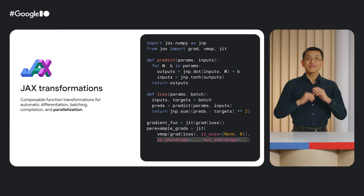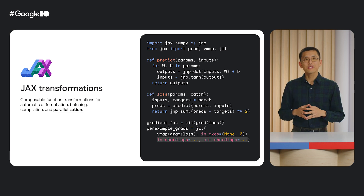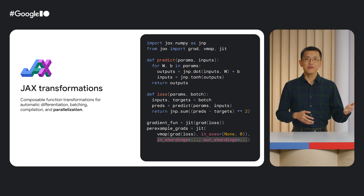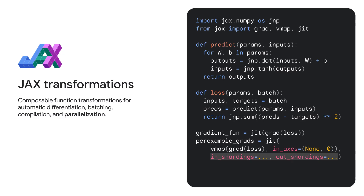In fully automatic mode, all you need to do is specify how to split the input and output of your data. The topic of parallelization is quite large, and there are many ways to split up your workloads. JAX provides a unified approach to parallelization through JIT, but also provides additional tools if you want partial or fully manual control. You get to specify how you'd like to parallelize and scale your data and your model.